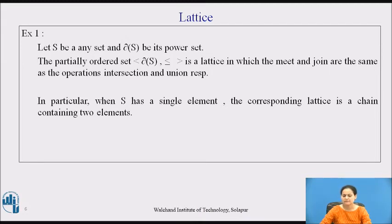If you recollect this statement saying that totally ordered sets are always lattices because they represent a chain. So here, in particular, when S has a single element, the corresponding lattice is a chain containing two elements.